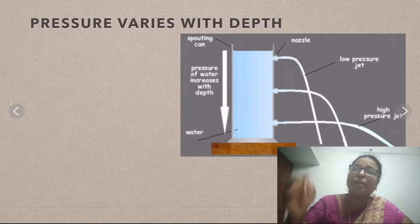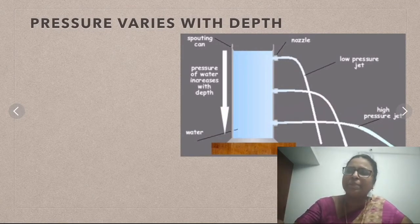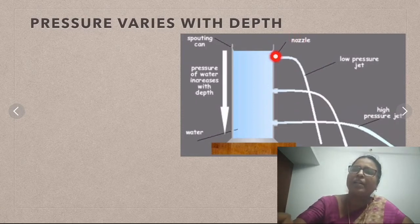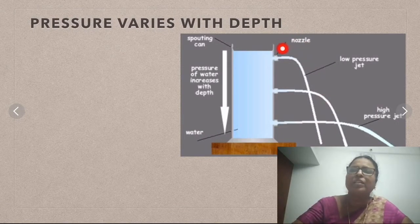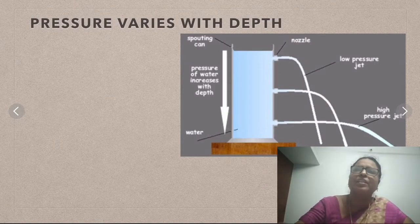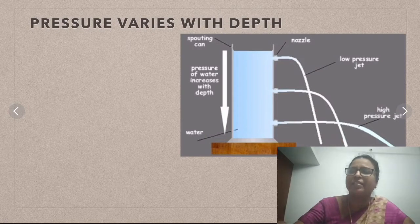At the deepest point, the water falls the maximum distance. Here you can see the water falls the maximum distance from the bottom hole. But at the first hole on top, it falls the minimum distance — near to the bottle itself.